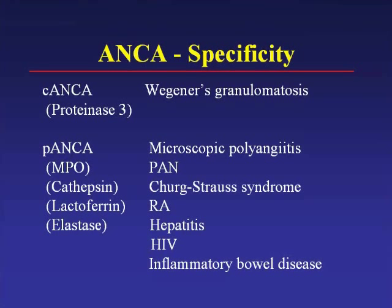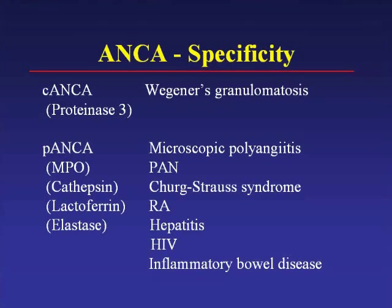The P-ANCA refers to the perinuclear pattern of staining with antineutrophil cytoplasmic antibodies, seen more dominantly in microscopic polyangiitis and Churg-Strauss, but also described in rheumatoid arthritis, HIV infection, hepatitis, and inflammatory bowel disease. The perinuclear ANCA has about four or five different neutrophil cytoplasmic protein targets including myeloperoxidase, cathepsin, lactoferrin, and elastase—many intracellular enzymes can be targets for these less focused antibodies compared to C-ANCA.